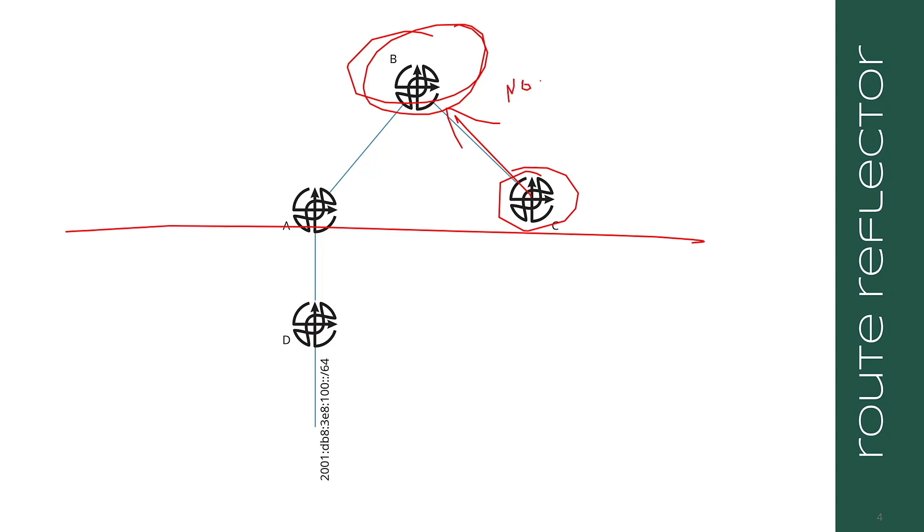So you can actually set next hop self on a route reflector and cause the routing path to go through the route reflector. You normally wouldn't do this because if the route reflector is serving a lot of clients, it's going to be carrying a ton of traffic in the network.